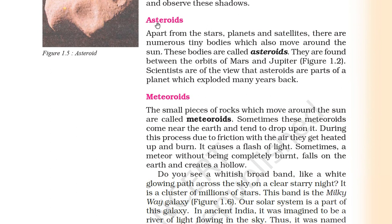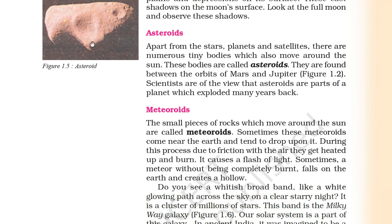First is asteroids. You will see a picture on the left side — looks like a rock. Now in a solar system, apart from the stars, planets and satellites, there are numerous tiny bodies which also move around the Sun. These bodies are called asteroids. They are found between the orbits of Mars and Jupiter.